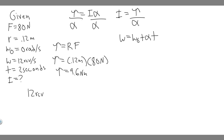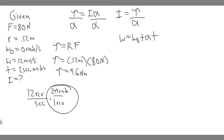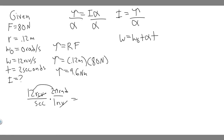To convert revolutions per second to radians per second, we use the fact that one revolution equals two pi radians. Multiplying 12 revolutions per second by two pi, the revolutions cancel and we get radians per second. So 12 revolutions per second equals 24 pi radians per second.